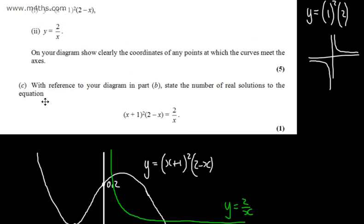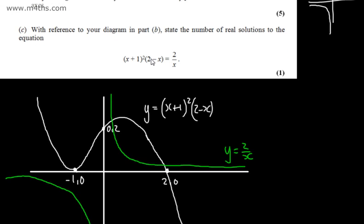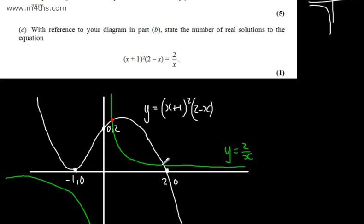Part C, for one mark: with reference to your diagram in part B, state the number of real solutions to the equation x plus 1 all squared multiplied by 2 minus x equals 2 over x. We can see on the diagram that we've got two points of intersection, so the number of real solutions is 2.